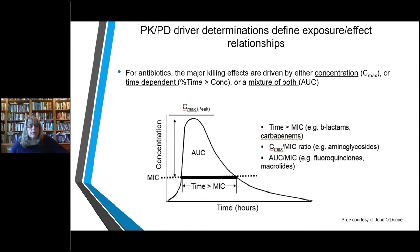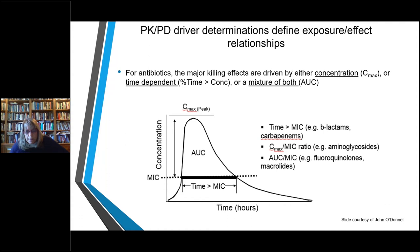For antibiotics, the PKPD driver determines exposure-effect relationships. You want to understand what pharmacodynamic property is most important for your antibiotic to exert its effect. Different classes have different PKPD drivers — they can be driven by concentration (Cmax), time-dependent (how long above a certain concentration), or a mixture. Beta-lactams are driven by time above MIC, aminoglycosides by Cmax/MIC ratio, and fluoroquinolones and macrolides by a mixture of both. Understanding the PKPD driver is critical when characterizing your new compound.